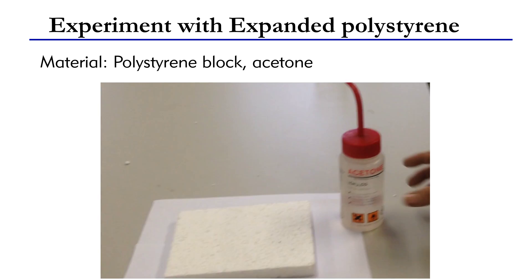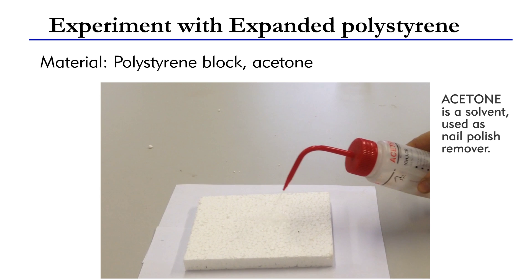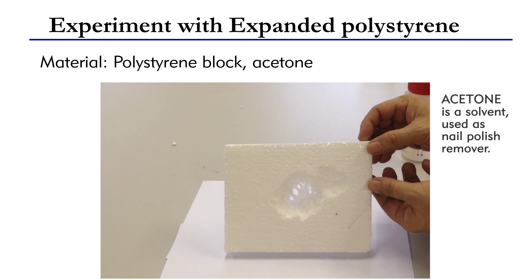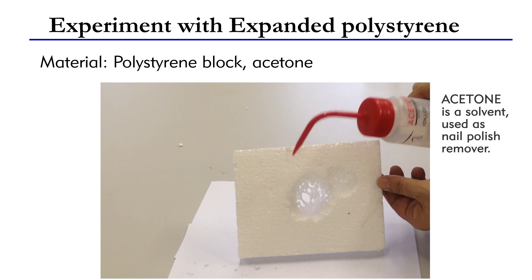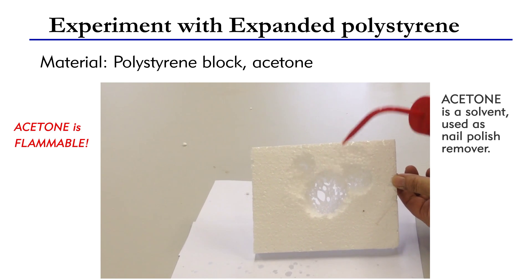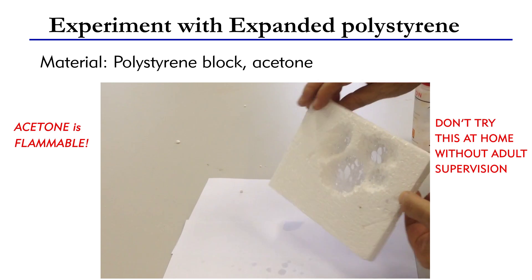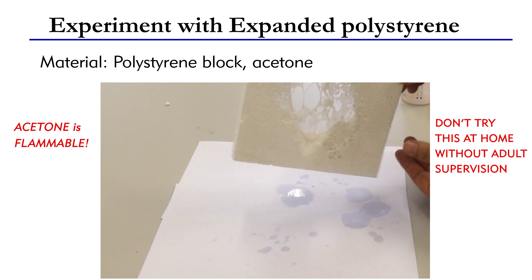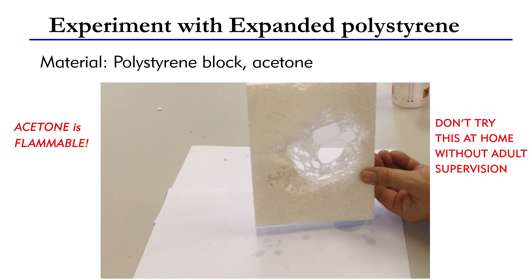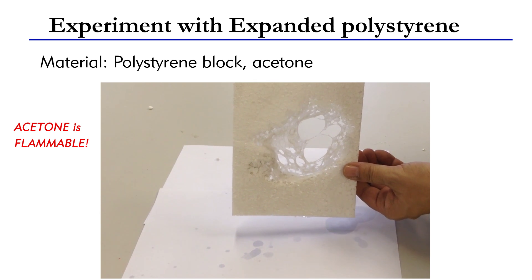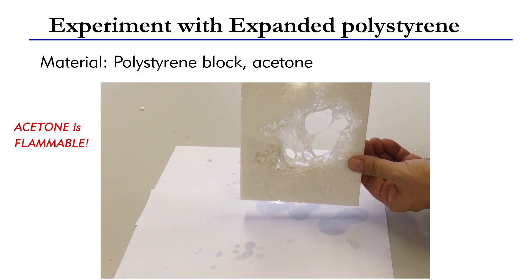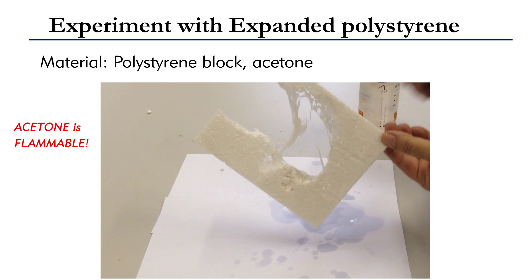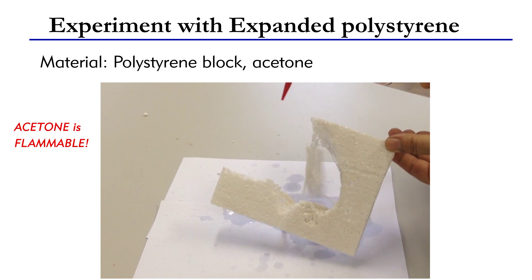The following experiment verifies that expanded polystyrene consists of mainly air. In this experiment, acetone is splashed onto a block of expanded polystyrene. Acetone is a good solvent and is used as a nail polish remover. It is highly flammable. Therefore, do not try this at home without adult supervision. When you really want to try this experiment, make sure that there is no naked flame nearby. Notice that the polystyrene dissolves in the acetone quickly. At the same time, the trapped air inside the polystyrene escapes and the block contracts dramatically. This experiment reverses the manufacturing process — the expanded polystyrene contracts and turns back to its original form.